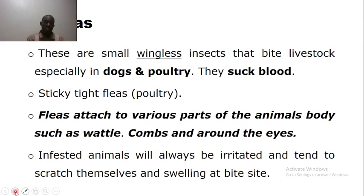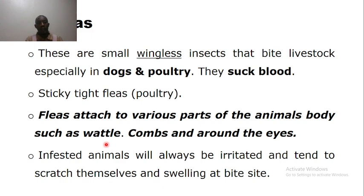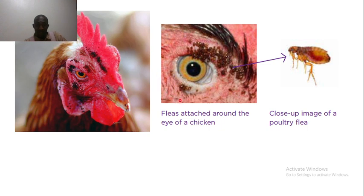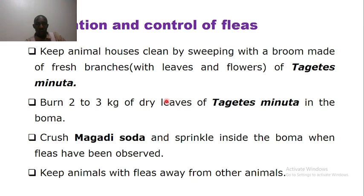The second external parasite is flea. Fleas are common in dogs and poultry, causing itching or irritation, and animals will suffer reduced reproduction due to stress. These fleas attach to various parts — in poultry, they are always found around the wattles, comb, and around the eyes. The animal scratches itself constantly and swelling occurs at the bite sites.